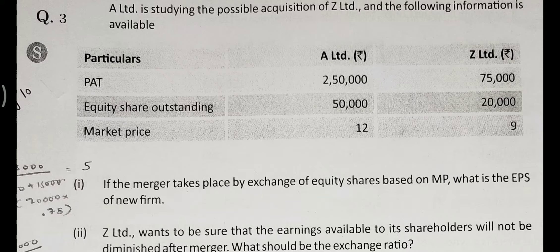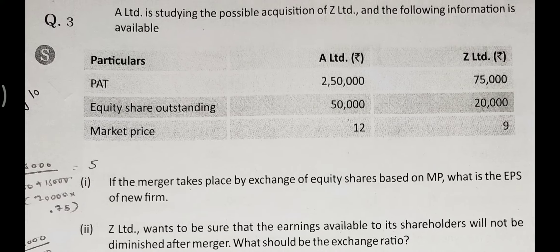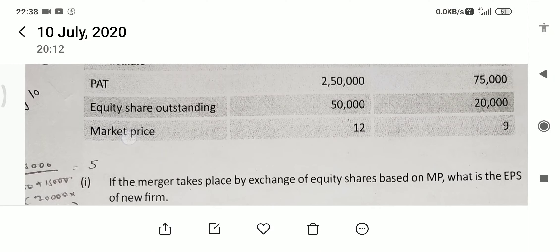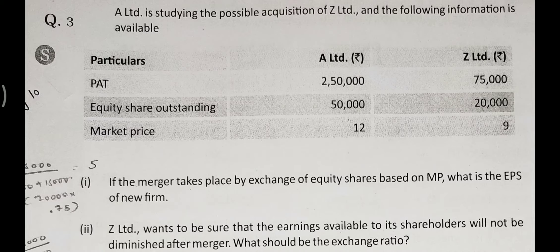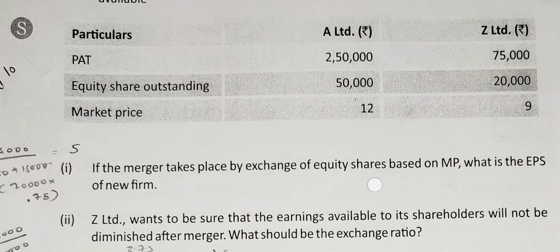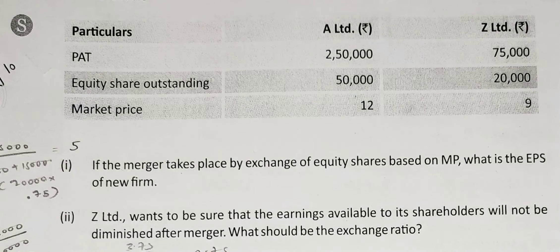So EPS of A Limited is 5, and EPS of Z Limited is 3.75. EPS calculated. Market price of A Limited is 12 and market price of Z Limited is 9. Clear. There is no difficulty in that.